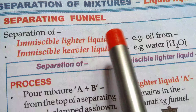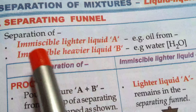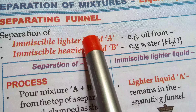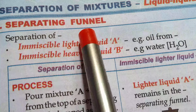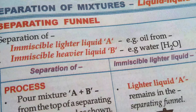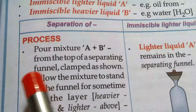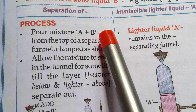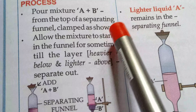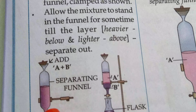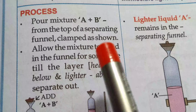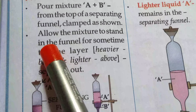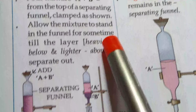One liquid is lighter than the other — the lighter liquid is separated out from the heavier liquid by the help of a separating funnel. To begin the process, pour mixture A and B from the top of the separating funnel. Allow the mixture to stand in the funnel for some time.